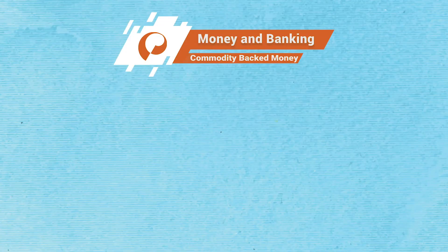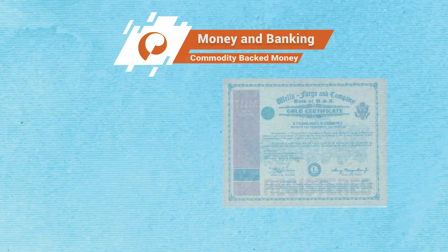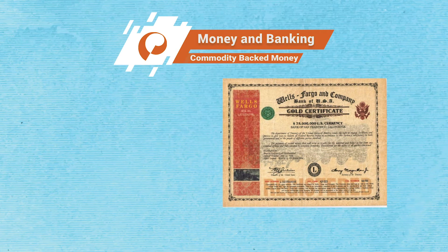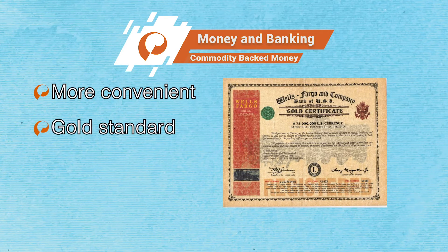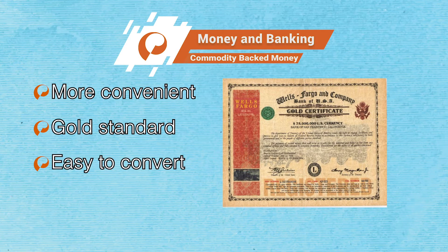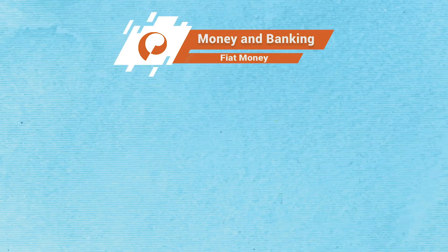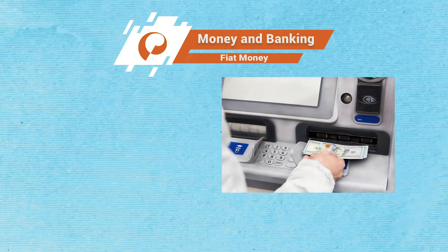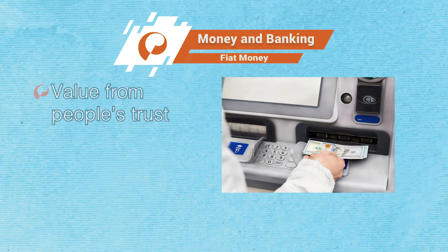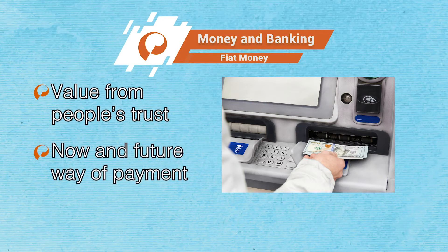In more recent times, private and central banks started issuing paper certificates backed by gold that proved a more convenient means of payment. Under the gold standard, the dollar was backed by gold. At any time, the carrier of a dollar bill could visit the central bank and have the dollar bill converted into gold. Nowadays, most money is in the form of paper certificates that are not backed by gold or any other commodity. This is called fiat money because its value comes from people's trust that now and in the future the certificates will be accepted as a means of payment.